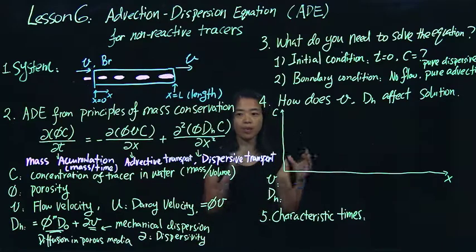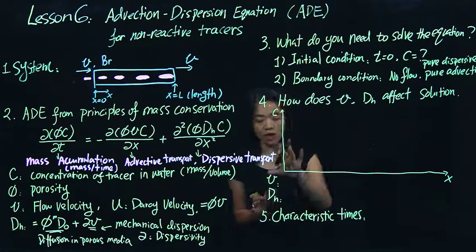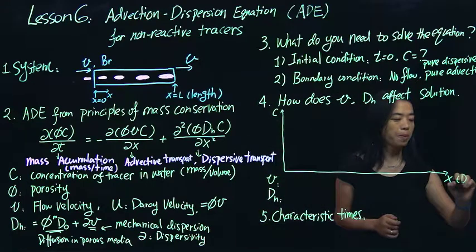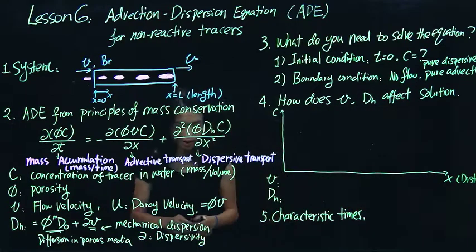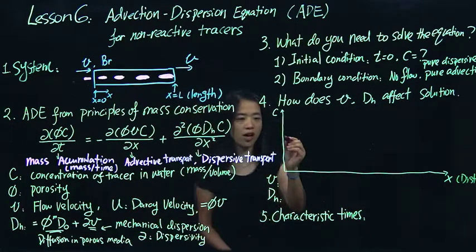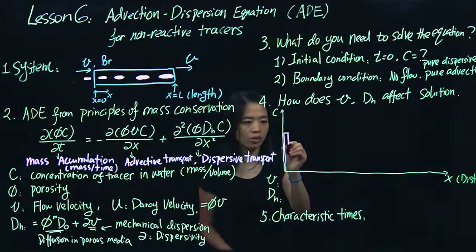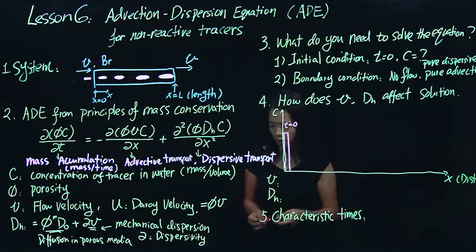So this is conceptually how you would think about this solution you expect to see. Now, when we think about it from a mathematical term, let's draw this. So after we solve it, let's say we look at the concentration as a function of distance. And what do you expect to see at different times? So first of all, let's say at initial time, you probably would see something like this. In here, you see a pulse of this chemical, right?